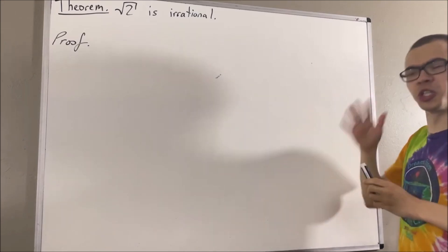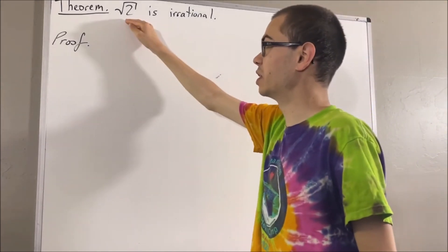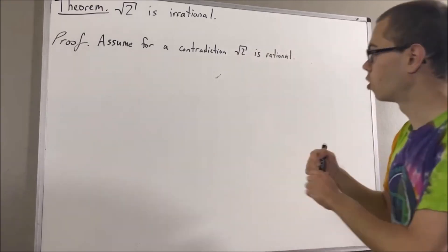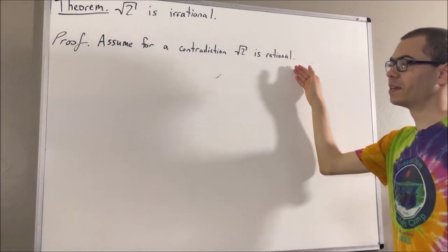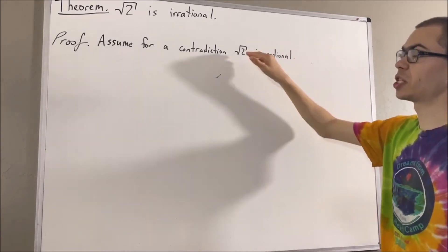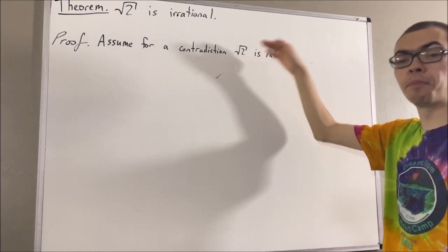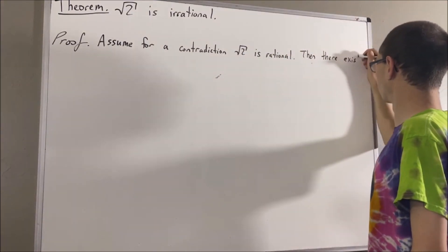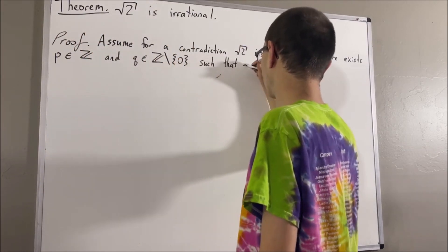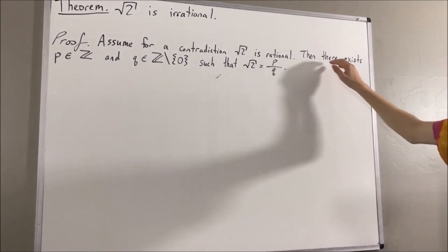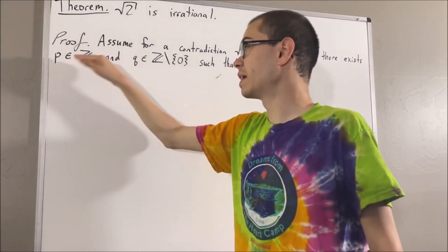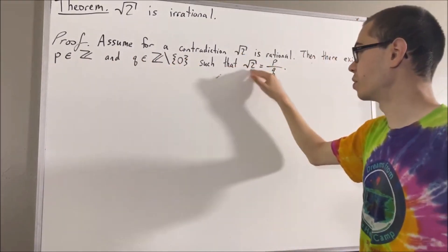To start out, assume for a contradiction that the square root of two is rational. What does it mean to be rational? It means that there is an integer p and a non-zero integer q such that the square root of two is equal to p over q. But it turns out this implies that there exists an integer p and a positive integer q such that the square root of two is equal to p over q.